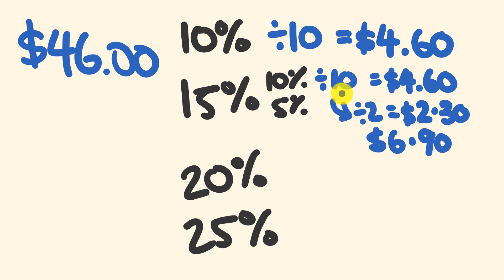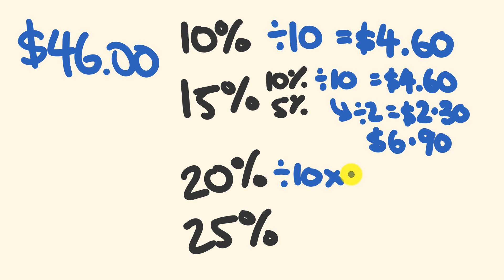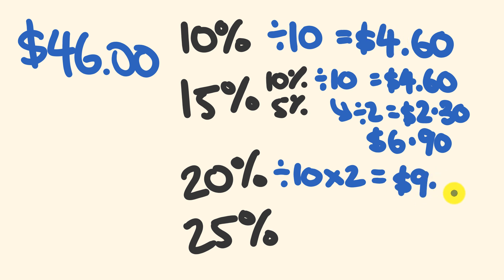For a 20% tip, we divide by 10 as before, then double the result. Twenty percent is made up of two lots of ten percent. Ten percent was $4.60, so we double that: $4.60 doubled is $9.20. That's your 20% tip.